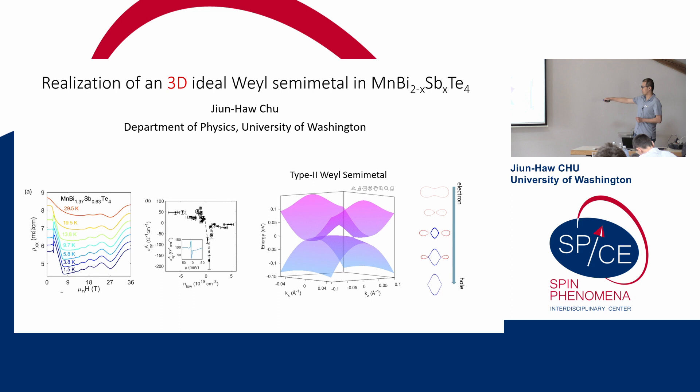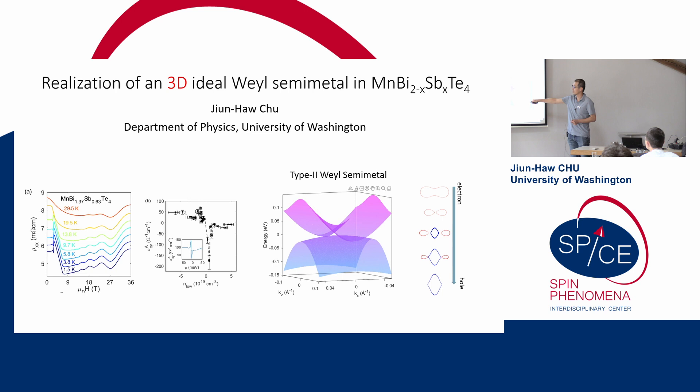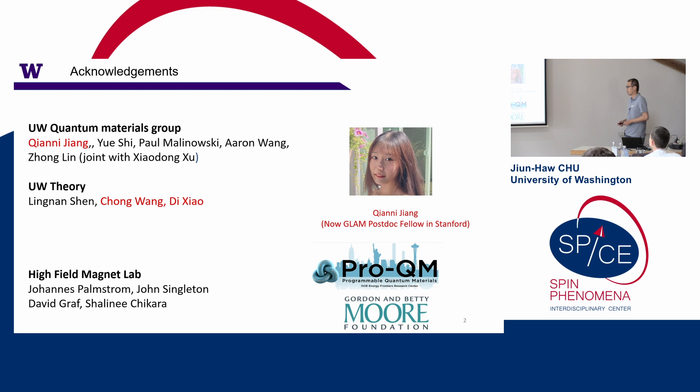We can map the evolution of the Fermi surface going from hole to electrons as it crosses the Weyl points. And there are some really interesting consequences coming from this type of band structure, where you see a singularity response in the anomalous Hall as you change the chemical potential.